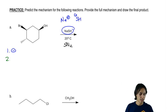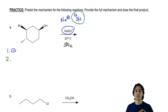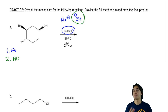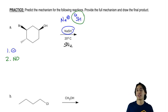Let's keep going. Second question: is SH⁻ one of my bulky bases? Yes or no? No. Remember there are only three bulky bases — you have to memorize those. Don't think about it too hard, just memorize them. SH⁻ is not one of them.